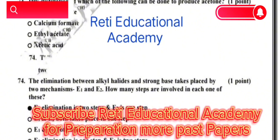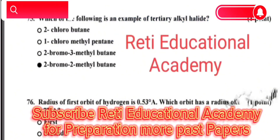Question number 74: The elimination between alkyl halides and a strong base takes place by two mechanisms, E1 and E2. How many steps are involved in each one of these? The correct answer is: E1 elimination involves two steps and E2 elimination involves one step.